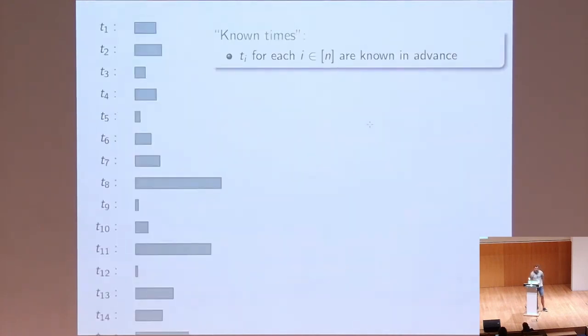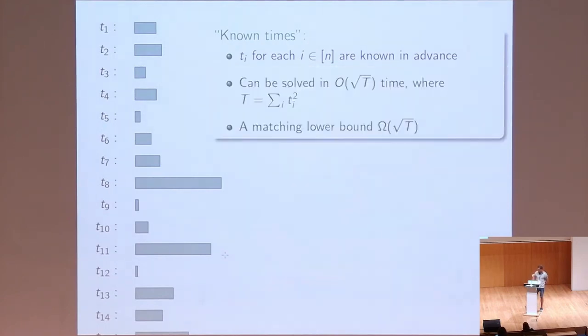Basically, these variable time search algorithms come in two flavors. The simplest case is the known times case when for each item we know beforehand how much time it will require, and we can use that information to design the quantum algorithm. And then there's a quite simple quantum algorithm achieving this complexity, square root of capital T, and there's a matching lower bound, so this is essentially optimal.